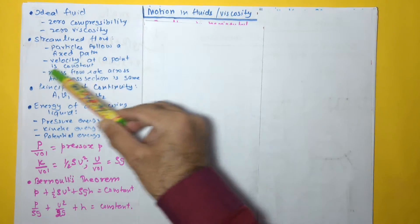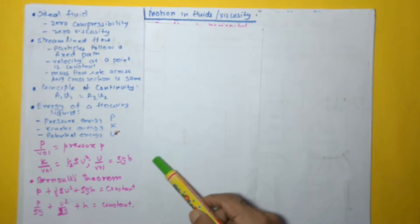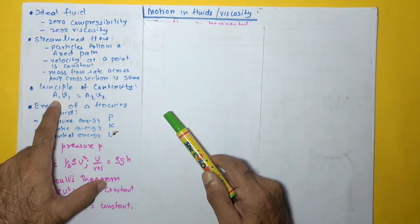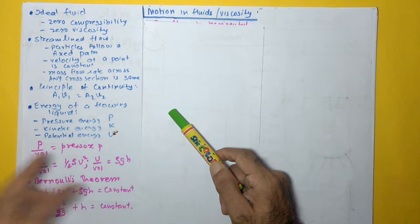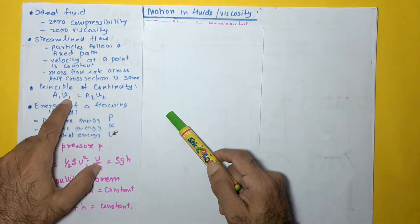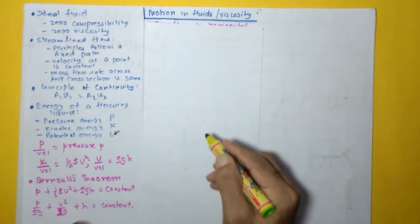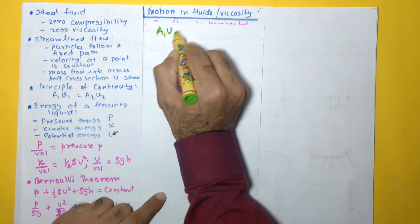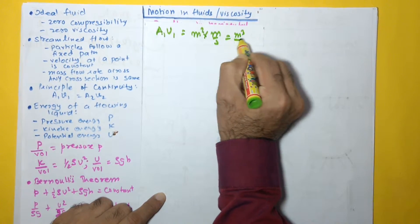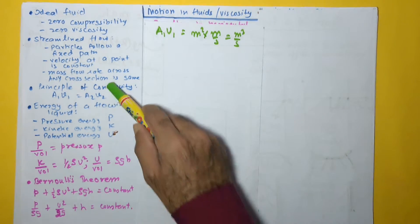Based on the third characteristic of streamlined flow, we get the principle of continuity, which says that at any given cross section the volume flow rate is the same: A1V1 = A2V2, where 1 and 2 are two different cross sections. A is the cross-sectional area of the pipe and V is the velocity of liquid flow, giving units of meter cubed per second, which is volume flow rate.